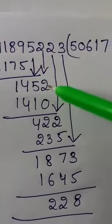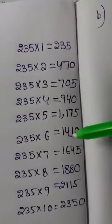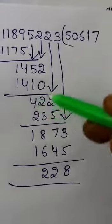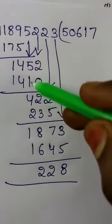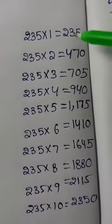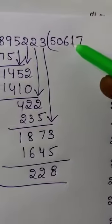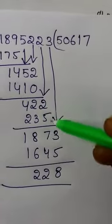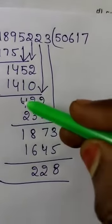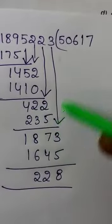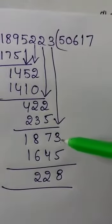If we add 0 to the next number, it will be 1452. This is 6 times — 6 plus 14 is 10, minus equals 42, 2 minus 0 equals 5, minus 1 equals 4. Next number is 422. So 1 plus 235: 12 minus 5 equals 7, 11 minus 3 equals 8, 3 minus 2 equals 1. Next number is 1873.